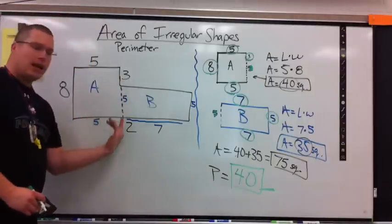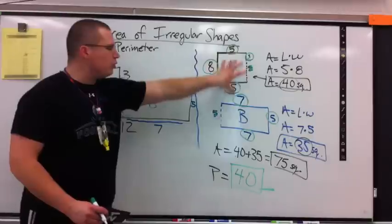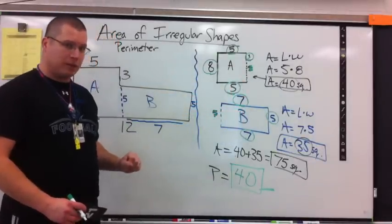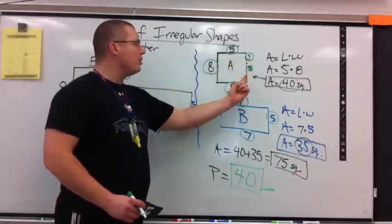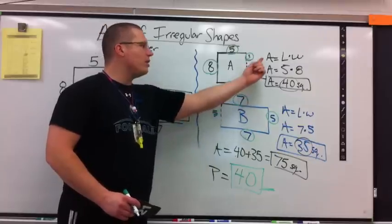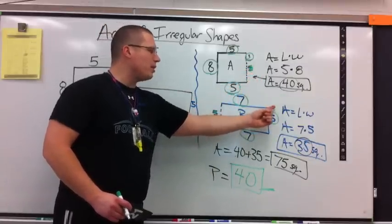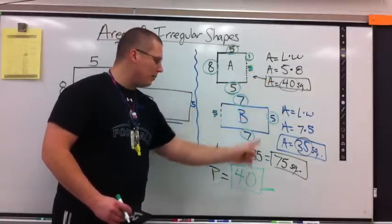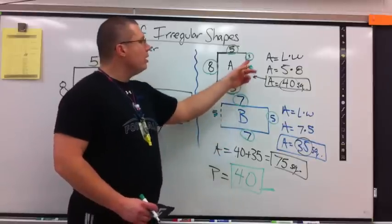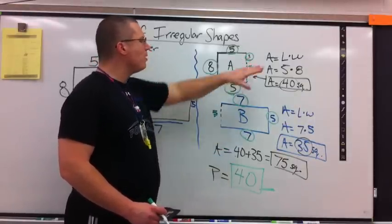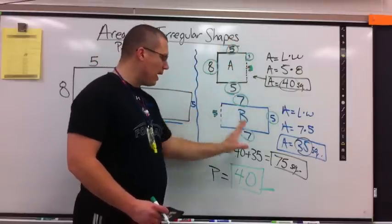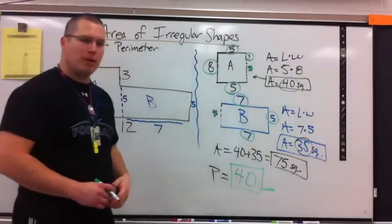Take the shape, cut it, split into separate pieces. Label all the sides. Calculate area, calculate area, add them up. Cross off the dash measurements because they're not part of the perimeter. Add up all the distance around and you found your perimeter.